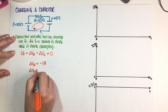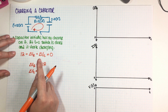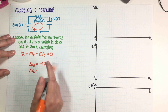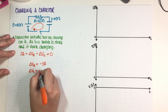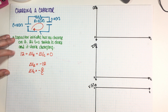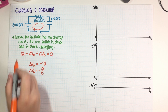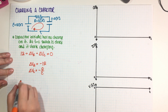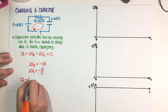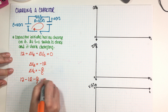Remembering that delta V across the resistor is negative IR by definition. And delta V across the capacitor — in this case the capacitor starts completely uncharged and is charging — so delta V is negative Q over C. So if I rewrite this, it's 12 minus IR minus Q over C is equal to zero.